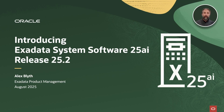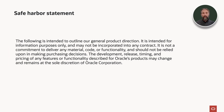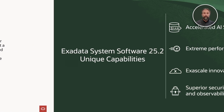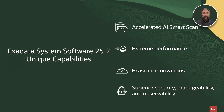Exadata System Software 25.AI release 25.2 has just been released. Let's take a look and see what's inside. Exadata System Software 25.2 has a number of unique capabilities. In this release, we focus on four key areas: accelerating AI smart scan, a continued focus on extreme performance, exascale innovations, and superior security, manageability, and observability capabilities.